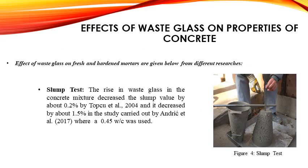Regarding effects of waste glass on fresh and hardened properties from different researches — slump tests: the rise in waste glass in a concrete mixture decreases the slump value by about 0.2% due to the poor geometry of waste glass, and also reduces workability by about 1.5% in the study where a 0.45 water-cement ratio was used with waste glass as an aggregate in concrete.